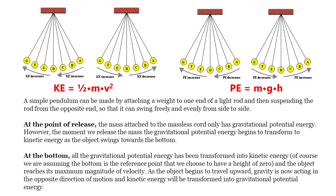A simple pendulum can be made by attaching a weight to one end of a light rod and then suspending the rod from the opposite end so that it can swing freely and evenly from side to side. At the point of release,